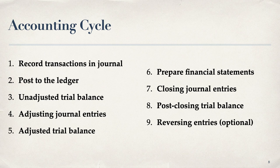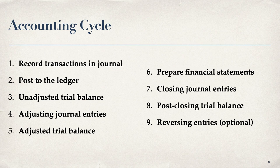At the end of the period we do an unadjusted trial balance — step three — to make sure debits and credits equal. We list every account with its debit or credit balance and verify it balances, confirming we haven't made obvious errors. Step four is adjusting entries, which we must make because over time things change and accounts need to reach their correct balance. For example, prepaid rent for three months gets adjusted to rent expense as it's used up. Step five is the adjusted trial balance, which is the trial balance prepared after adjusting entries have been made.